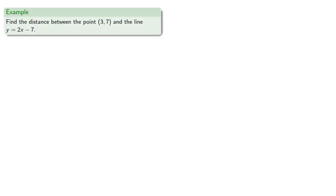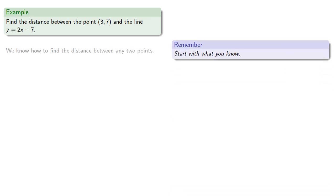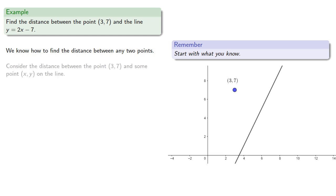For example, let's try to find the distance between the point (3,7) and the line y = 2x - 7. A key idea: start with what you know. We know how to find the distance between any two points, so let's consider the distance between the point (3,7) and some point (x,y) on the line. As we move along the line, this distance changes.